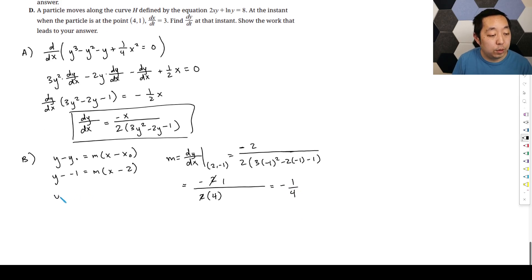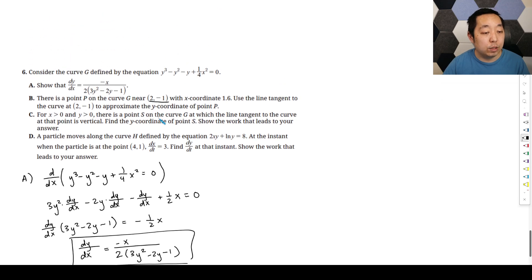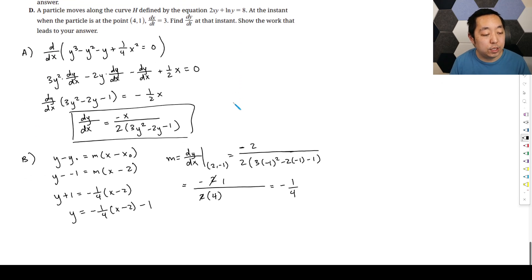So then you get y plus 1 is equal to negative 1 fourth x minus 2. And so y, you can just move that minus 1 to the other there.